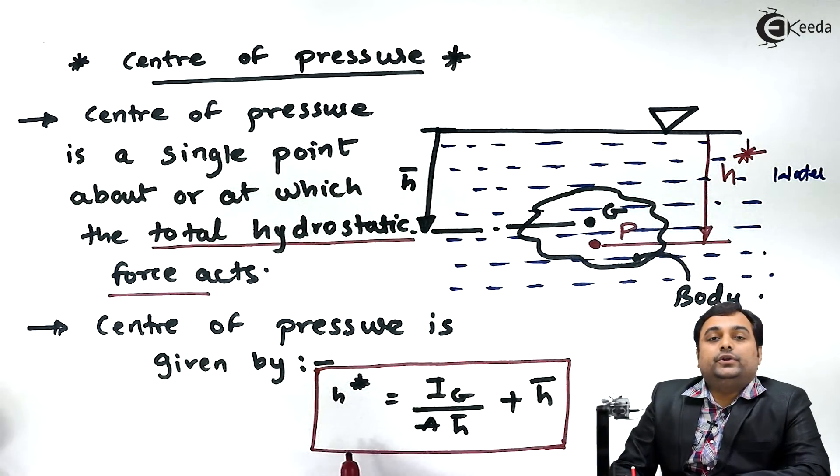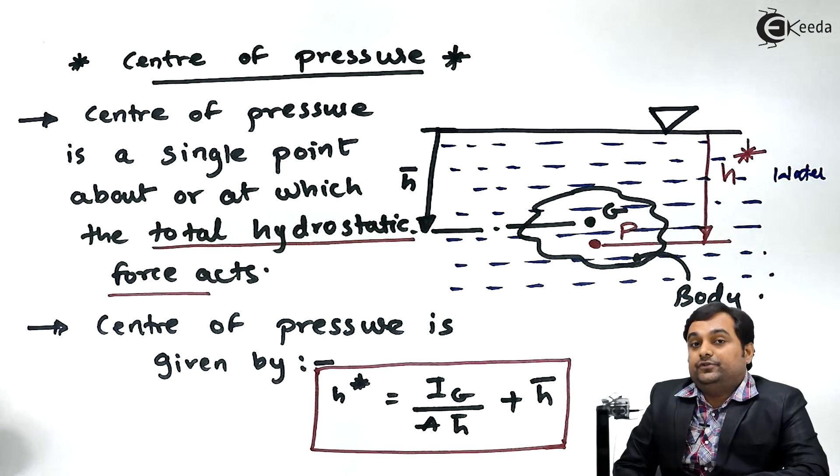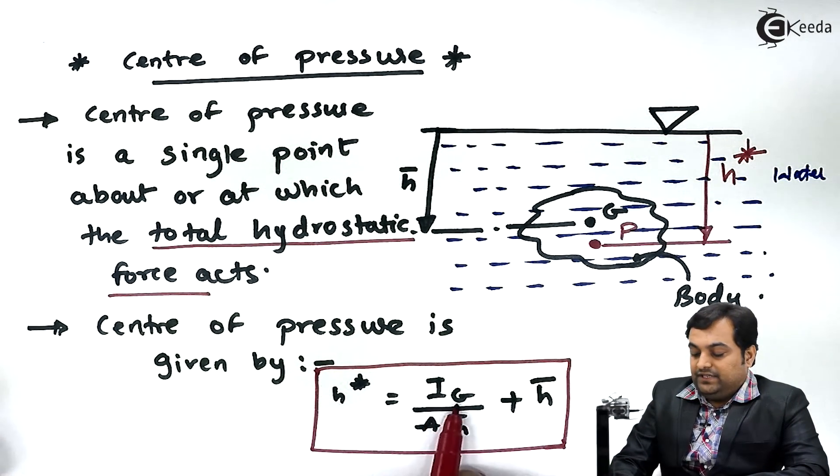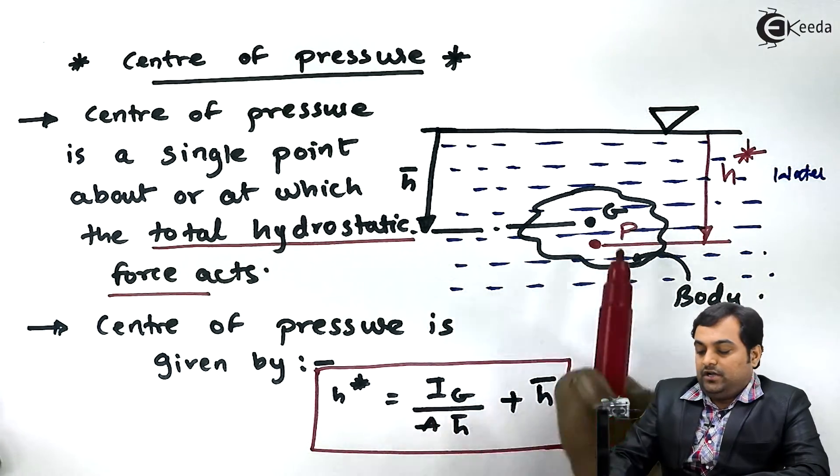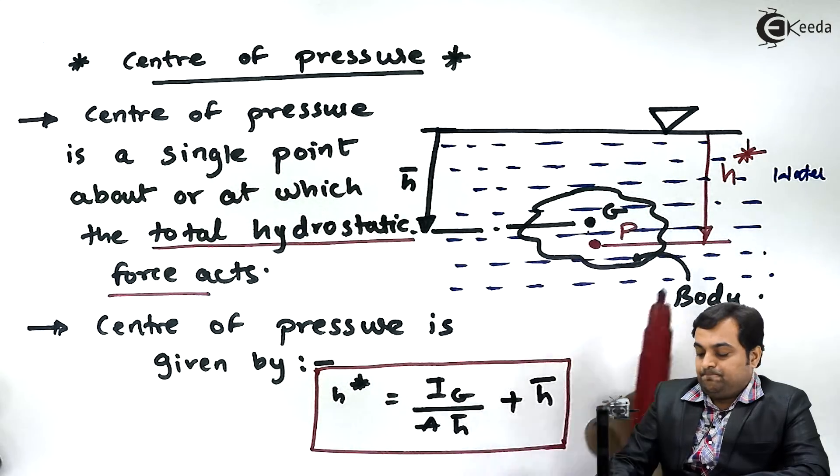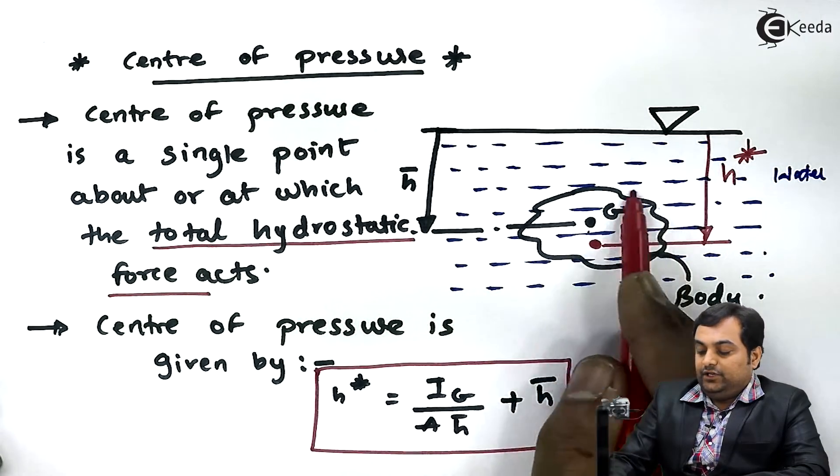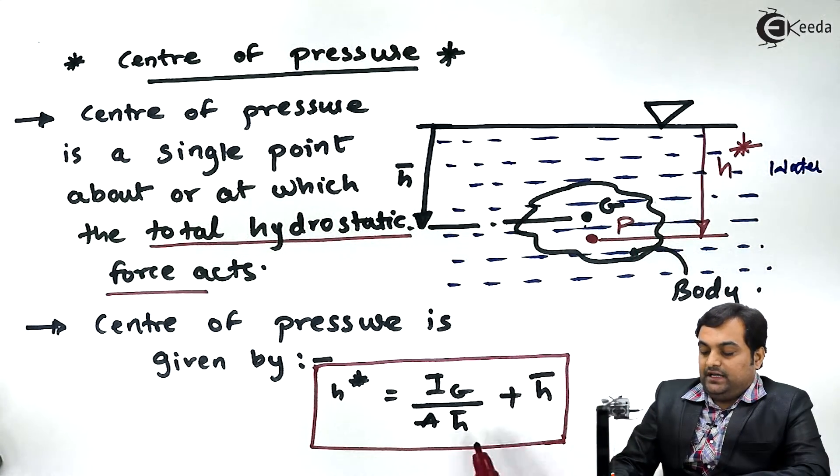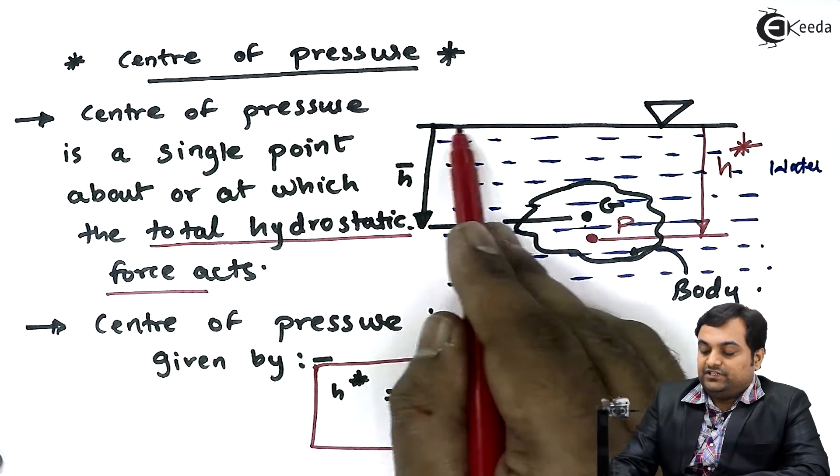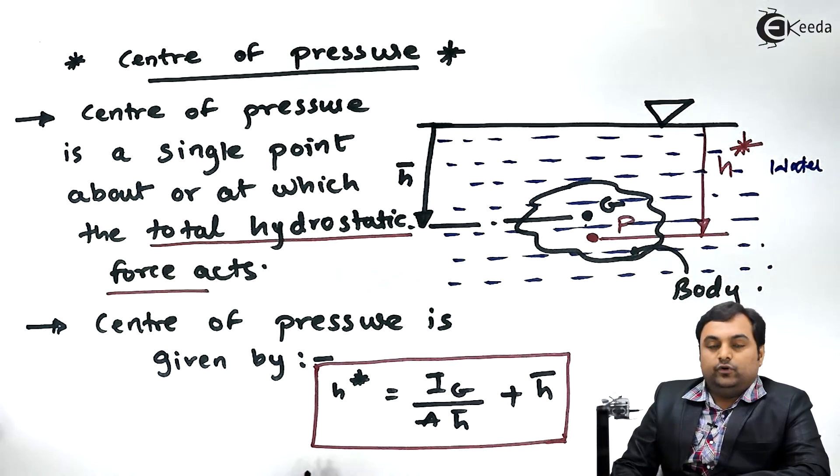Here I have written the formula to calculate the center of pressure, that is, it is a single point where the hydrostatic force acts. IG is the moment of inertia about the centroid G, capital A is the area of this body, H bar is the distance of centroid from the free surface of liquid. Once we know all the values, we can easily get center of pressure from this formula.